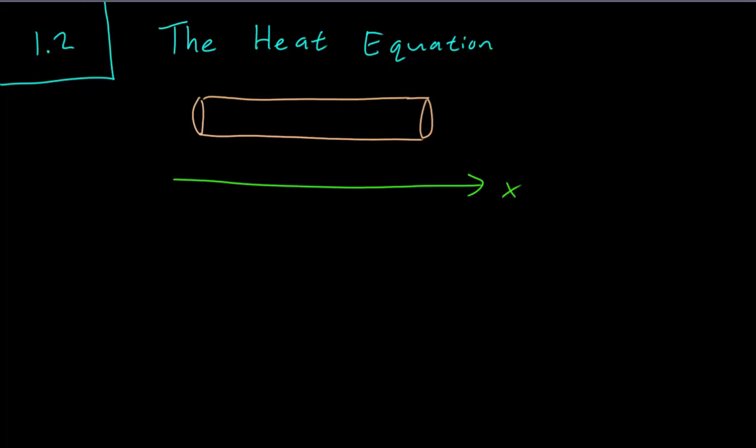So again, just a reminder of our situation, we have this rod, it is laid out horizontally like so with the x-axis labeled and we want to write down an equation that tells us how the temperature changes with space and with time.